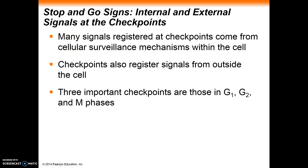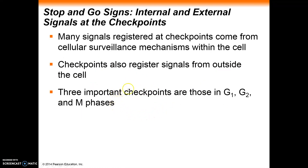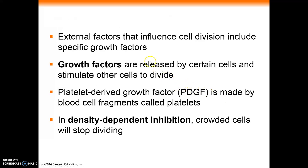Stop and go signals can come from both internal and external mechanisms. These three checkpoints are largely described in terms of internal mechanisms looking for problems. So let's think about the external aspects — specifically, external factors that influence the cell cycle.